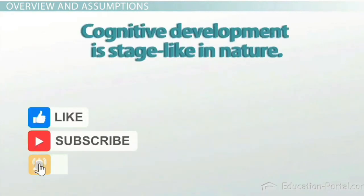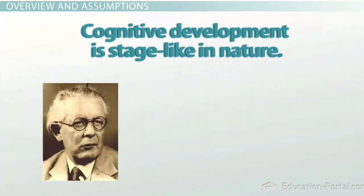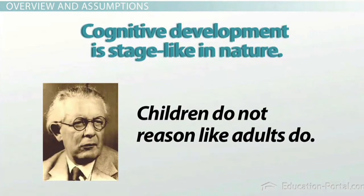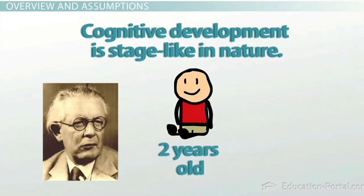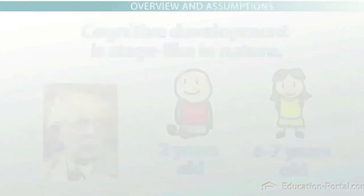Our final assumption is that cognitive development is stage-like in nature. According to Piaget, children do not reason like adults — they must develop sufficiently to allow more complex cognitive reasoning. These changes are speculated to occur when children are around two years of age, and then again around six to seven years of age. These stages are discussed in more detail in another lesson.